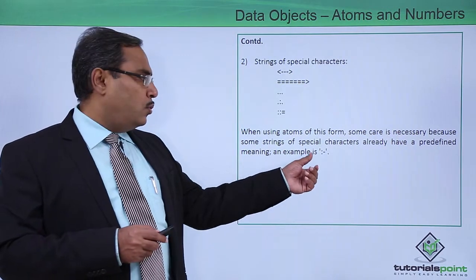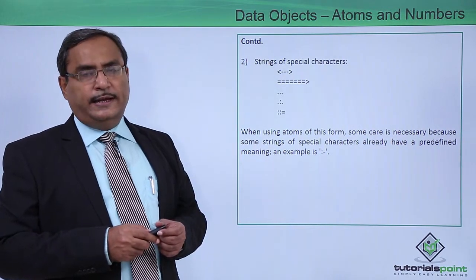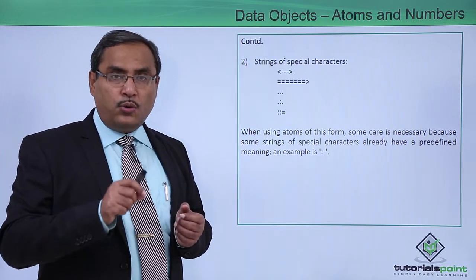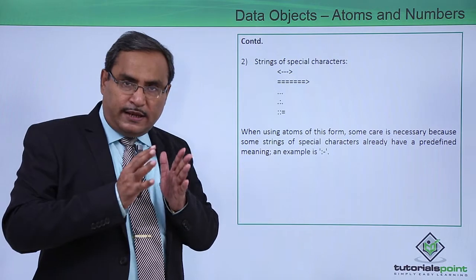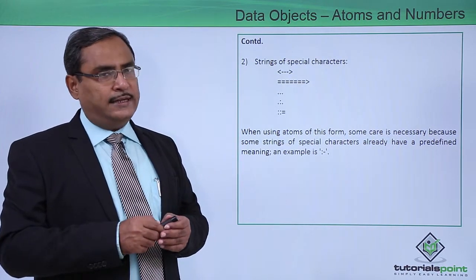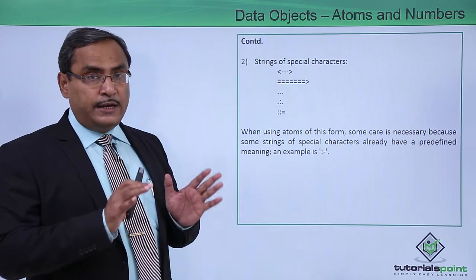As example, colon dash indicates 'if'. In our Prolog clause writing we always go for this colon dash, it indicates if. So this colon dash cannot be used as an atom because it is predefined.